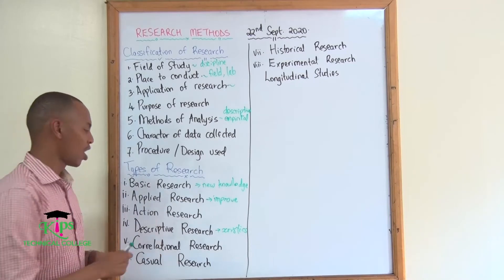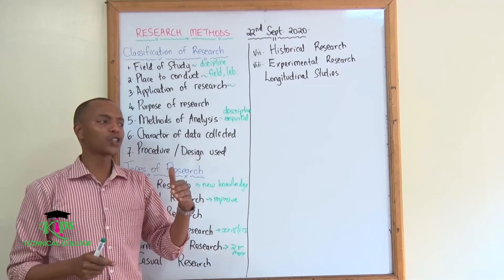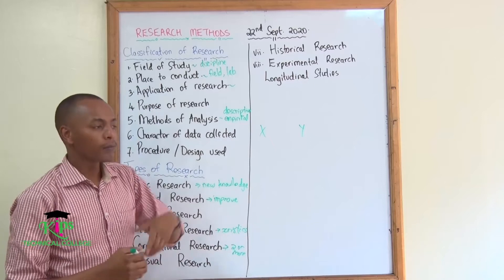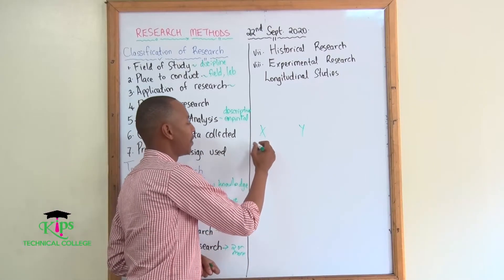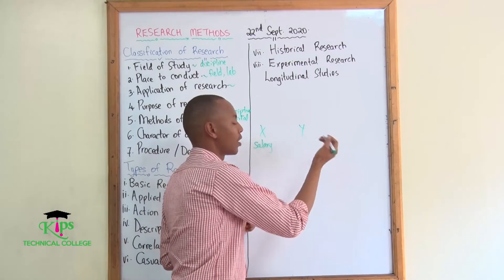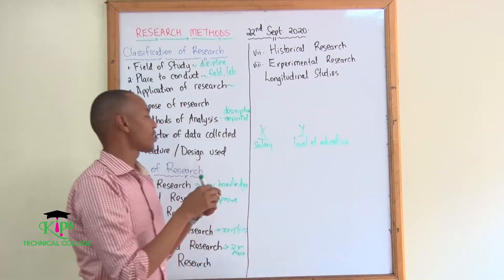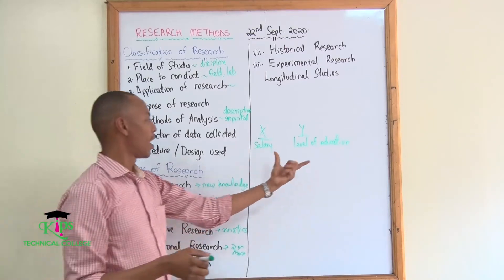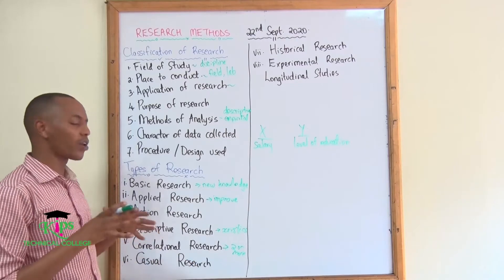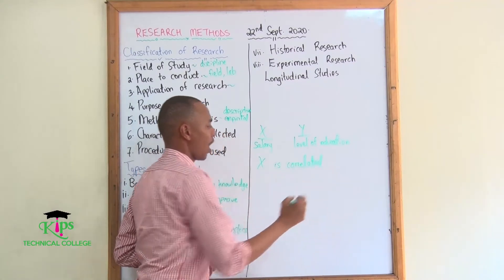Then you have correlational research. Correlational research usually tries to understand two or more things — it tries to understand the relationship between a variable X and a variable Y. For example, let variable X be the salary that someone receives and variable Y be the level of education. You carry out a correlational research to show how X is correlated to Y.